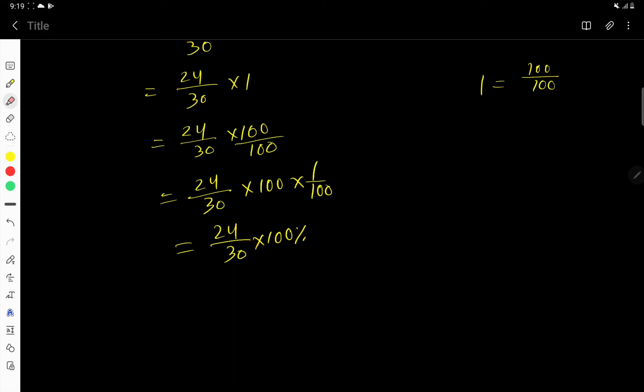Cancel this zero, this zero. So you are getting 24 divided by 3 times 10 percent. If you divide this 3 by 3, you'll get 1, and 24 by 3 is 8, so 8 times